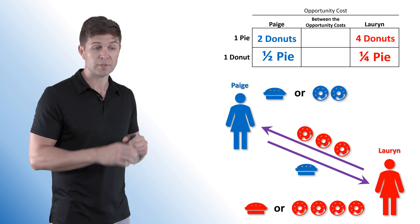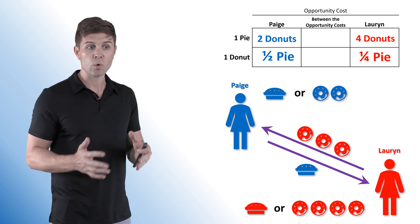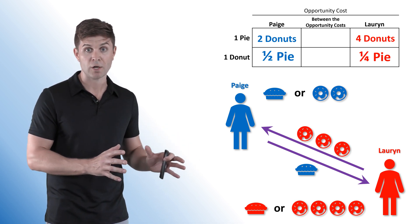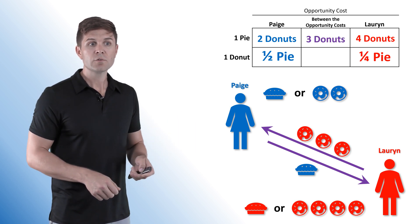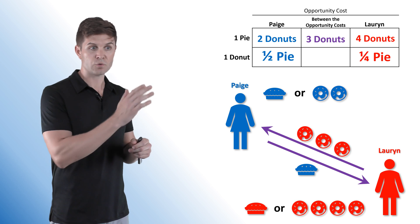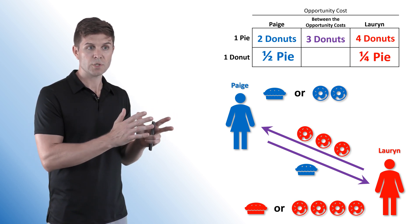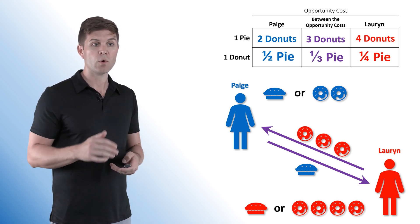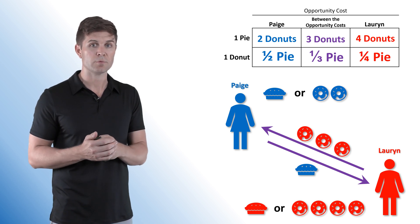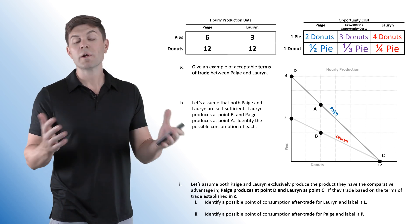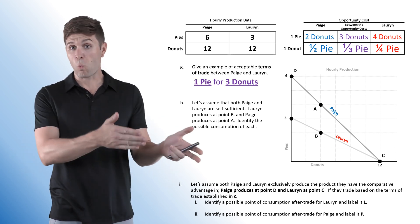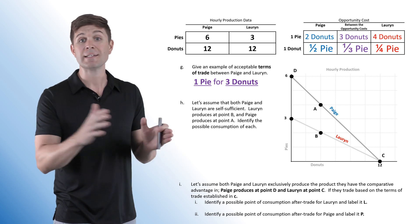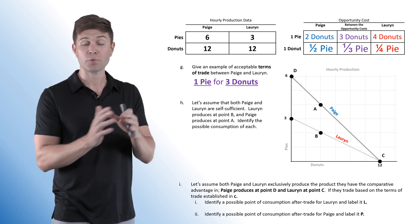Three donuts is greater than the two donuts it costs Paige, and less than the four donuts it would cost Lauren. Both benefit. Inversely, one donut for one-third of a pie would also be an acceptable terms of trade. In short, an acceptable terms of trade for one pie is anything greater than two donuts but less than four — one pie for three donuts works very nicely.